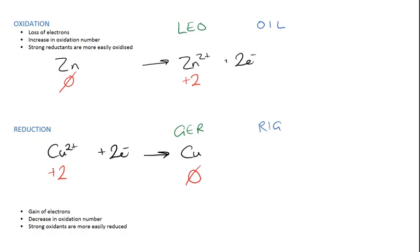Again, in this one here, stronger oxidants are more easily reduced. So this means that the copper two plus is a stronger oxidant than the Zn two plus. So some of these definitions are ones that you need to get.